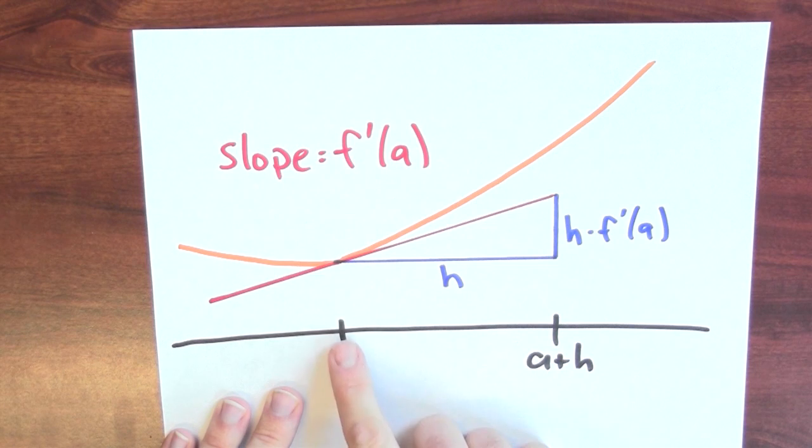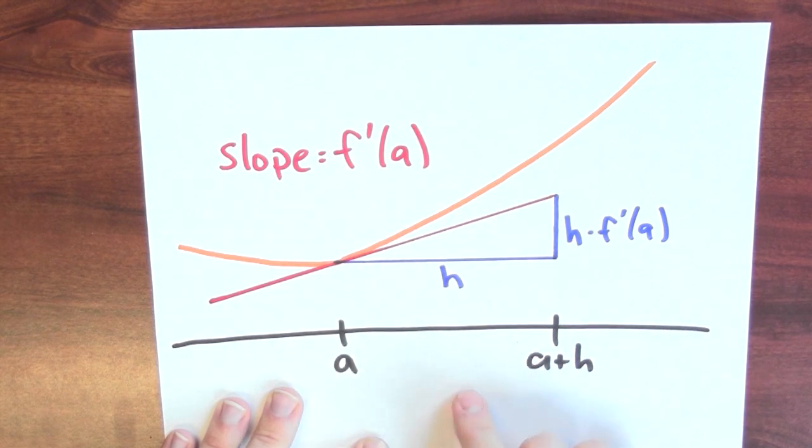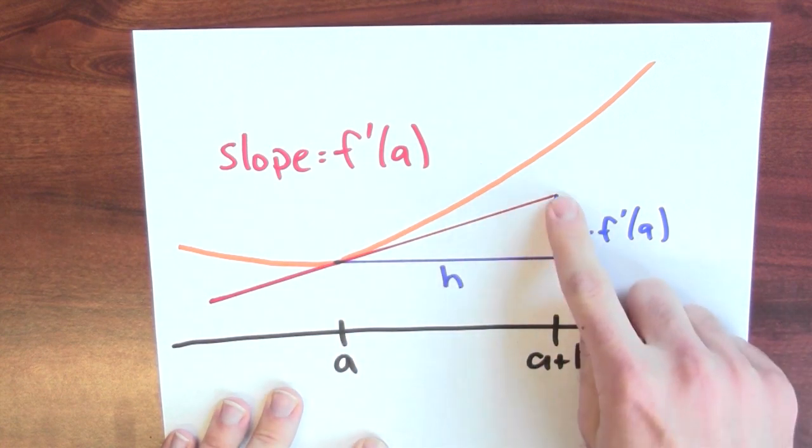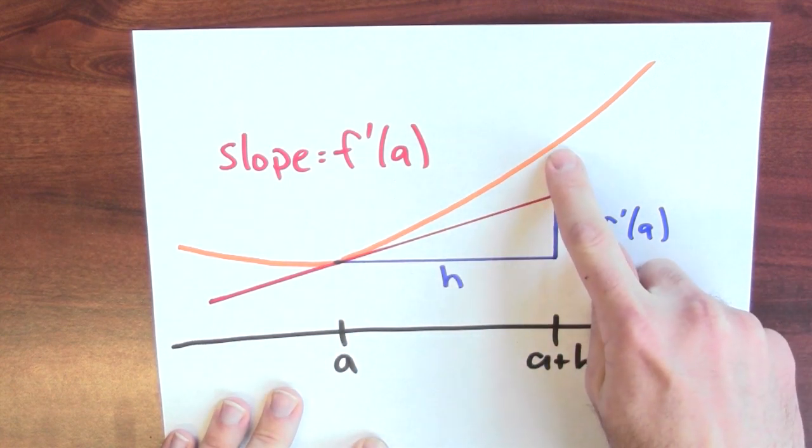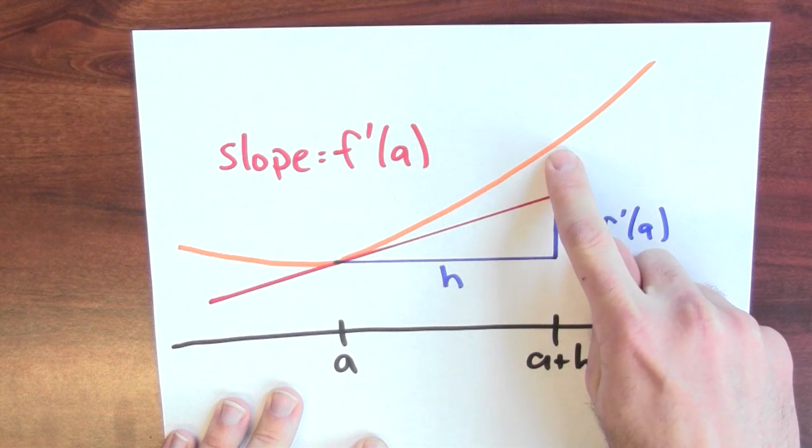Now, this is giving me some information about how wiggling the input would affect the output. If I move from a to a plus h, well, on the tangent line, I'm moving up to this point, which isn't so far off of the real value of the function up here.